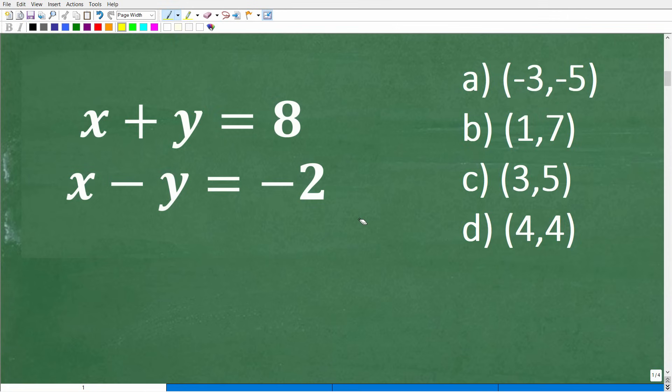All right, so two-variable. Well, there's two variables here, x and y. So I'm calling this a two-variable linear. Now, I'm going to spell this out real quick. System. All right, so this is just going to be a quick, quick review. Okay, so two-variable. We have two variables, x and y.